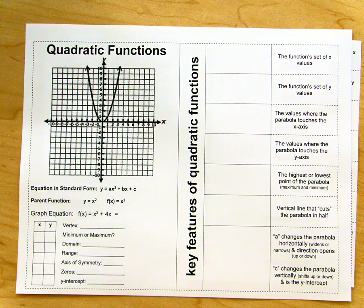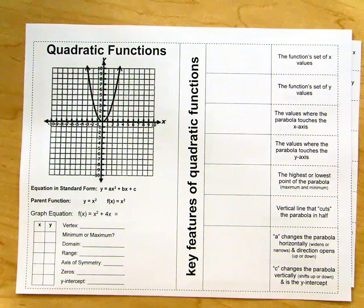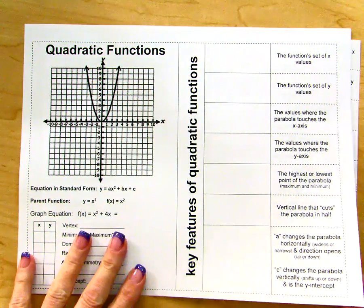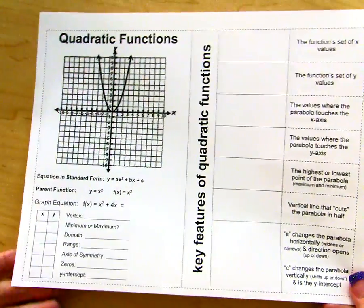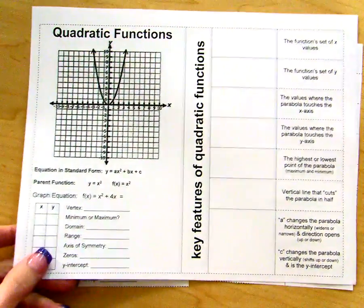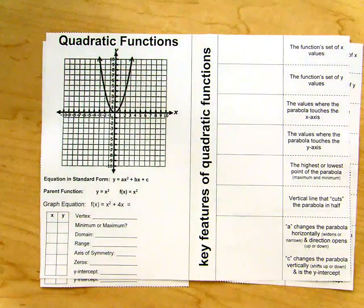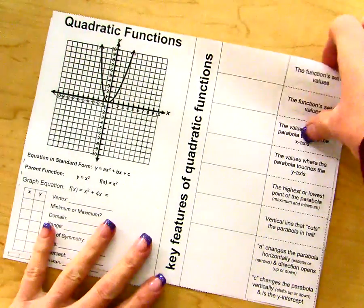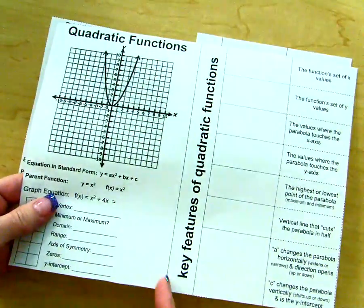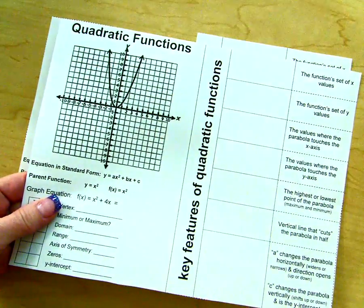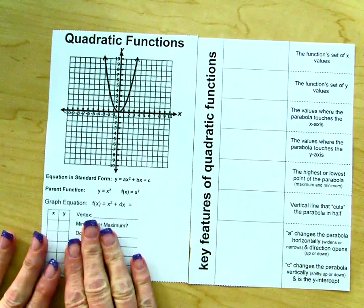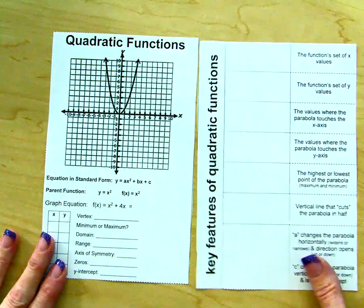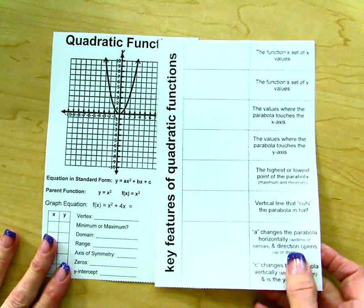In this video we are going to be looking at the characteristics of quadratic functions and this is going to be a two-part video. In part one we're looking at our notes page here and you notice how it has a dotted line all the way around. You're going to need to cut out around that dotted area so that you end up with a sheet that looks like this. Then cut along this line right here so that you now have two pieces. We are only going to deal with this piece here with the large graph on the front, and this piece we'll deal with in the second video.